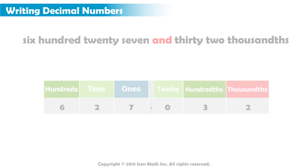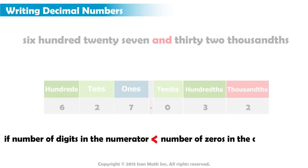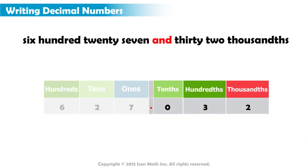The general rule for this is that if the number of digits in the numerator is less than the number of zeros in the denominator, then we should write zeros to the left of the decimals until the total number of digits is equal to the number of zeros in the denominator. In this case, we have two digits in the numerator, which is less than three zeros in the denominator.